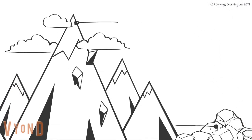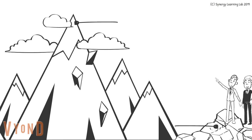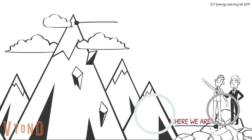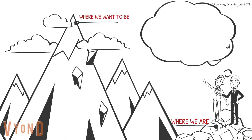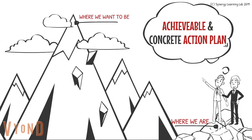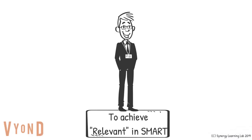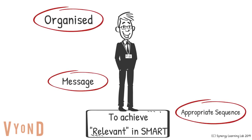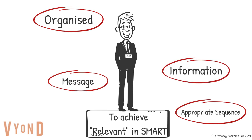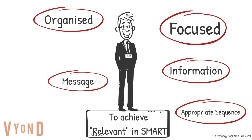Particularly, when the purpose of the communication is to give instruction, it is important to ensure that the instructions are achievable and with a clear action plan. To achieve relevance, it is important to organize your message with appropriate sequencing, so that the communication stays to the point and has a clear agenda.